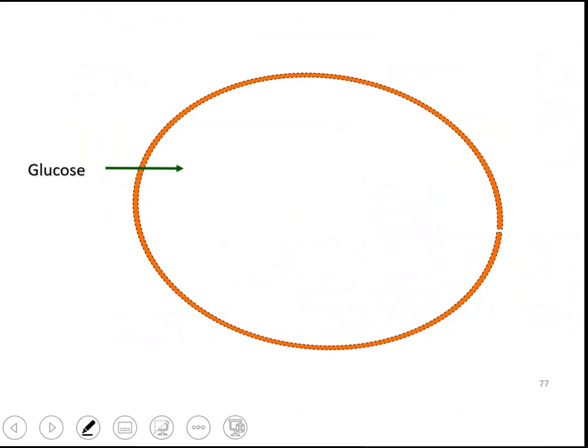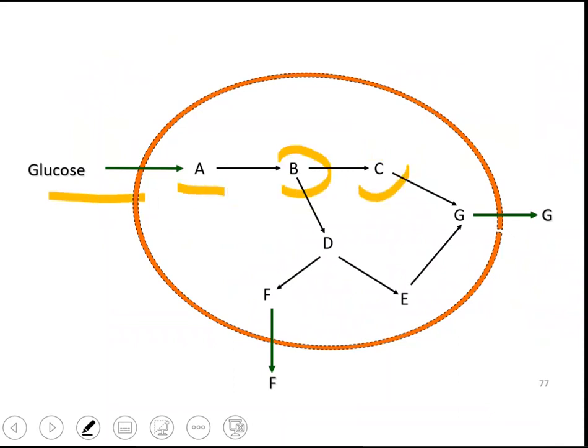Now, let's see this hypothetical cell. Glucose is taken up. It is converted to some other intracellular metabolites, the metabolites that are not secreted out. And some of those metabolites formed inside are secreted out.